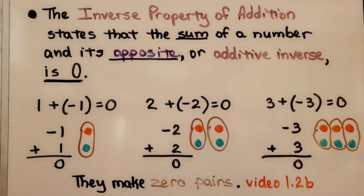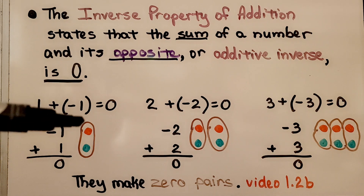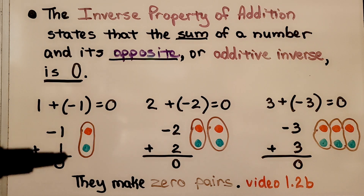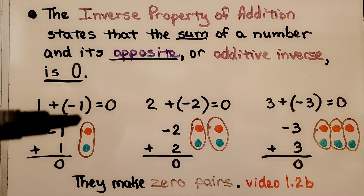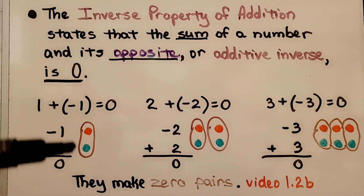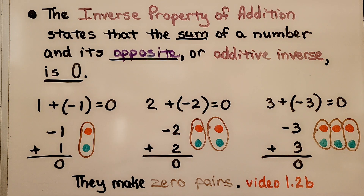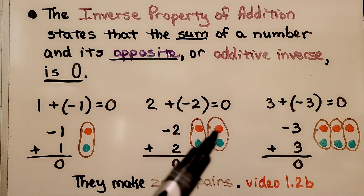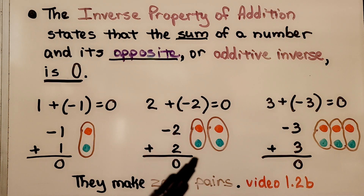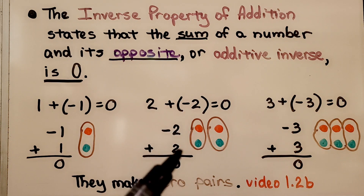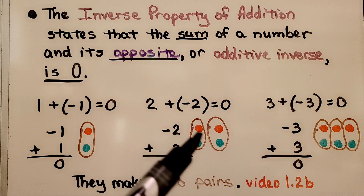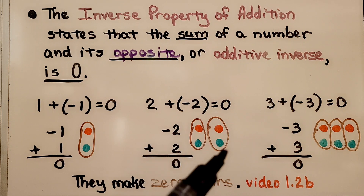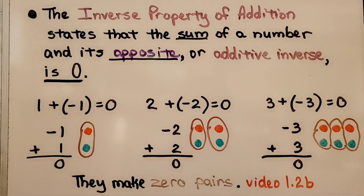If you remember from video 1.2b, we have a negative counter and a positive counter. We circle them — they make a zero pair, they equal zero. Here we have two negative counters and two positive counters. We circle one negative and one positive to make a zero pair, then circle another negative and positive to make a zero pair. We have none left over — they're equal to zero.